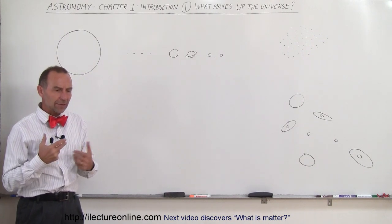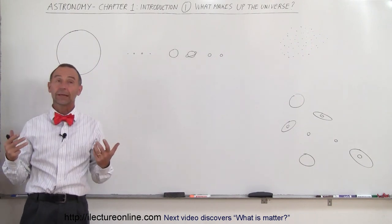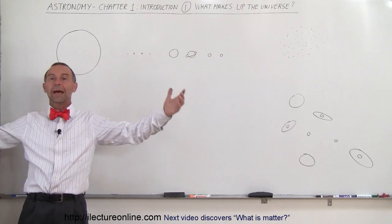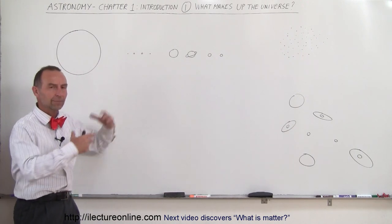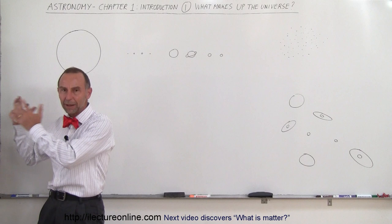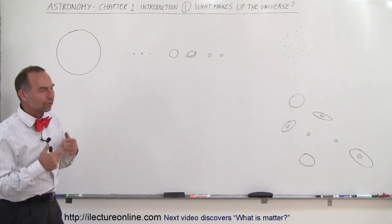Most people when they think about the universe first think about planet Earth and its companion planets Venus, Mercury, Mars, the big gas planets, and of course the Sun. Then there's other stars like the Sun.